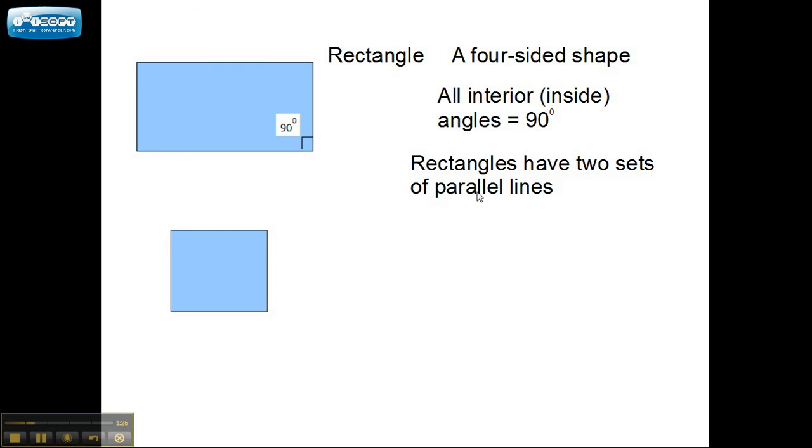Rectangles have two sets of parallel lines. If you don't know what parallel is, it is this line and this line going off into infinity and never touching. This line and this line is parallel. They go off into infinity and never touch. That's what parallel means.